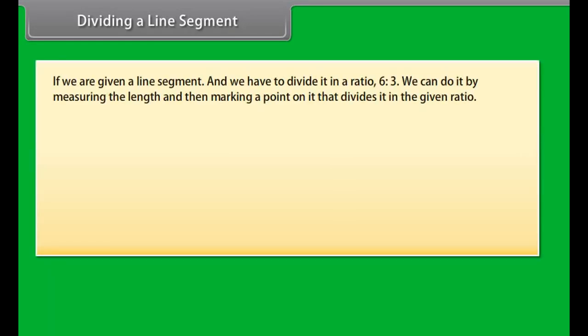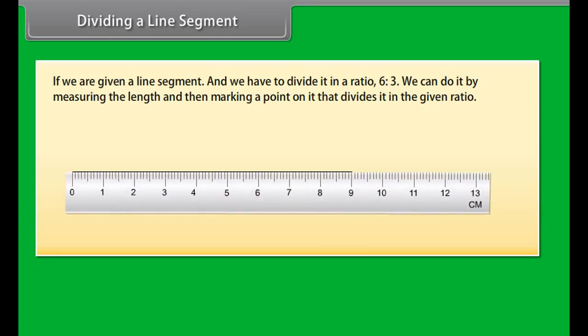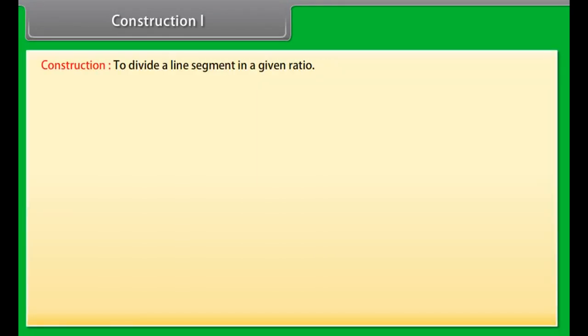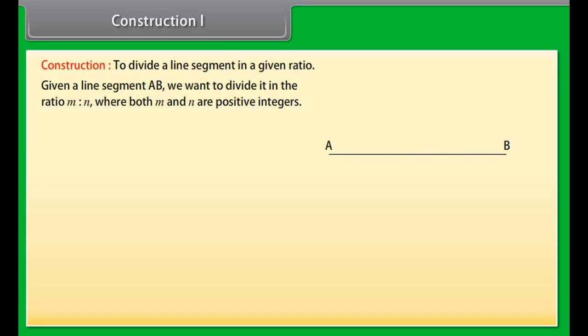Dividing a line segment. If we are given a line segment and we have to divide it in a ratio 6 is to 3, we can do it by measuring the length and then marking a point on it that divides it in the given ratio. But suppose that we do not have any way of measuring it precisely. So we will use the constructions shown in the next screen to divide a line segment in a given ratio. Let's learn.